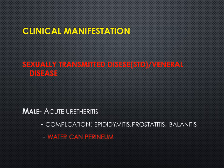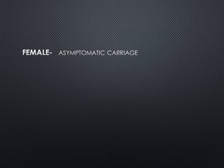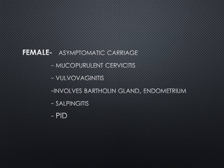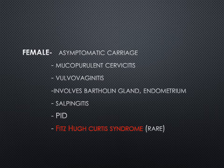In females, they are usually asymptomatic. If there is a presentation, mucopurulent cervicitis is the most common, along with vaginal discharge, vulvovaginitis, involvement of Bartholin's gland, endometrium, or fallopian tubes. The most important complication is pelvic inflammatory disease, which can lead to infertility. A rare but important condition is Fitz-Hugh-Curtis syndrome, which involves peritonitis along with hepatic inflammation — an important MCQ topic.